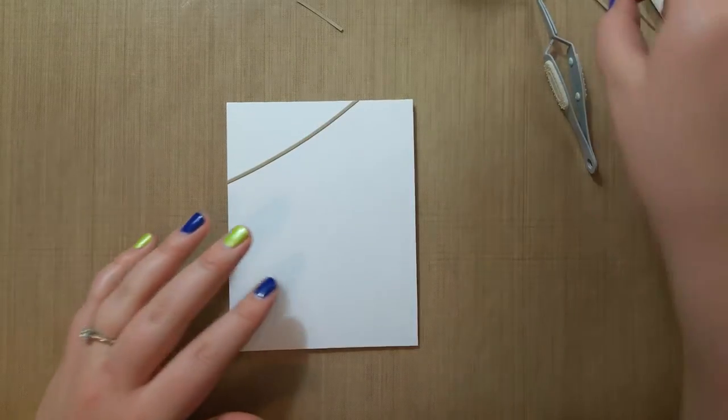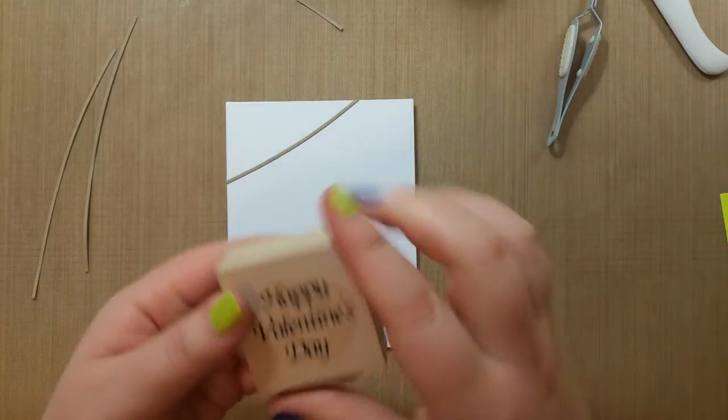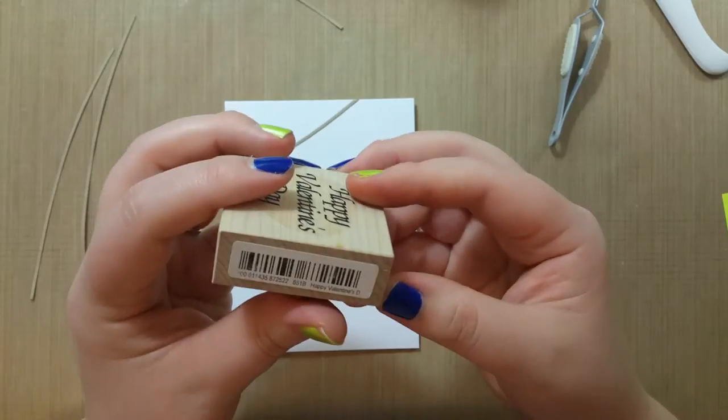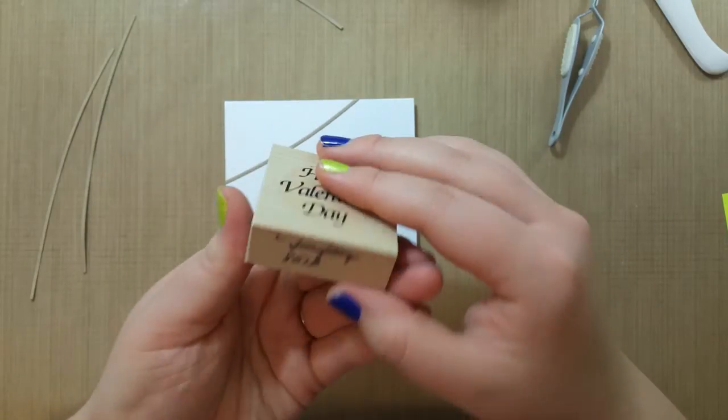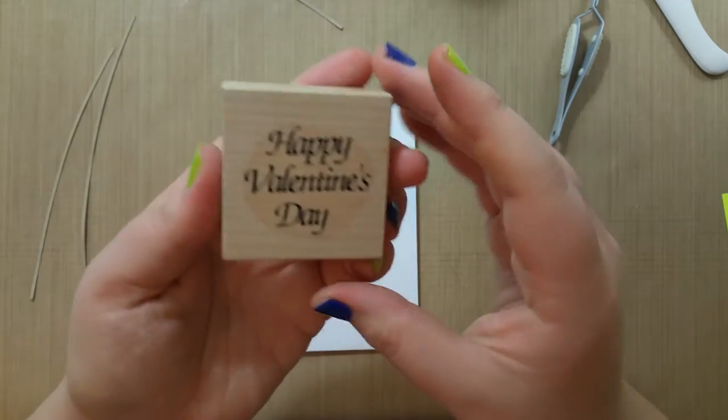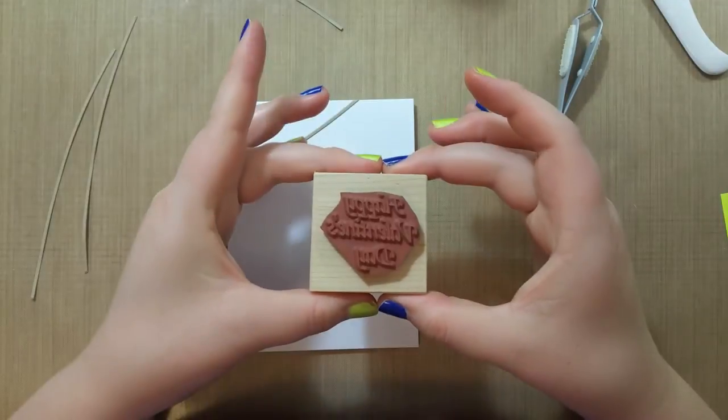I'm going to stamp the sentiment down here before I do the rest of these, because I don't want to run out of room. I have a few Valentine's Day stamps. I think I'm going to use this one—it's from, I don't actually know who made it, maybe Savvy Stamps. It's written on except it's crooked, so that's kind of hard.